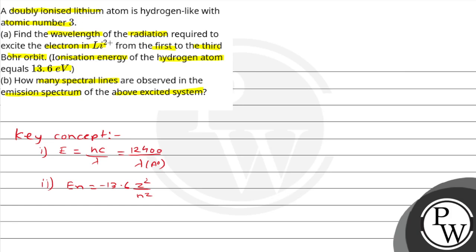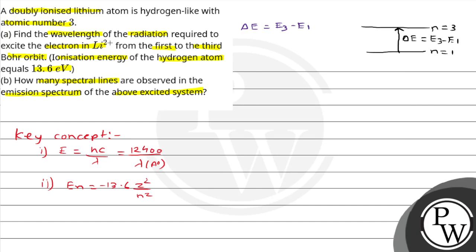इस question में हमें दिया है कि एक ऐसा radiation है जिससे hydrogen-like atom n=1 से n=3 वाले state में transition कर रहा है। तो उसके लिए जो wavelength लगेगी वो हमें find out करनी है। Transition के लिए जो energy difference होगा वो E3 − E1 के equal होगा।